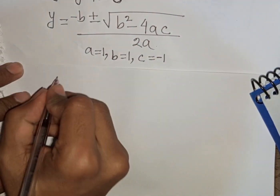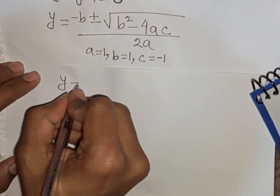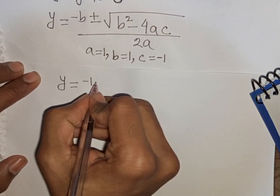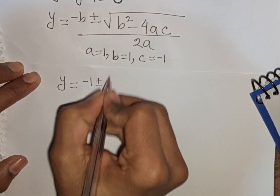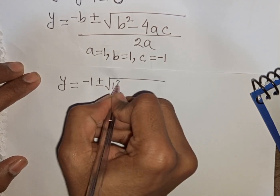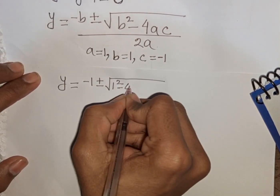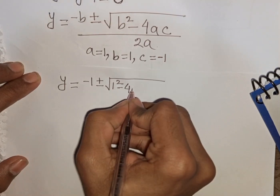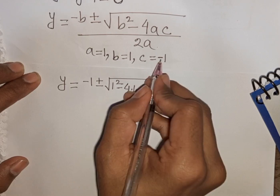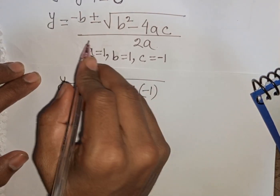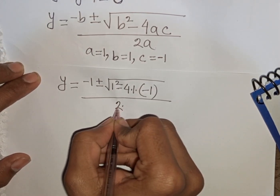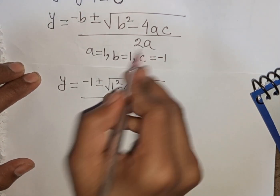With B = 1 and C = -1, we substitute into the quadratic formula: Y = (-1 ± √(1² - 4·1·(-1))) / (2·1).